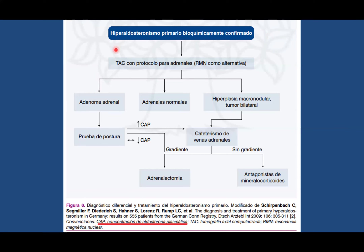Una vez diagnosticado bioquímicamente al paciente con hiperaldosteronismo, tenemos que hacer el diagnóstico imaginológico también, mediante tomografía o resonancia magnética dependiendo del paciente. Al realizar el estudio imaginológico más el estudio bioquímico, podremos decidir el procedimiento de adrenalectomía o simplemente el tratamiento farmacológico. Idealmente la mayoría de pacientes tienen que tener ambos: el tratamiento farmacológico y el tratamiento quirúrgico dependiendo de lo que se evidencie en el estudio imaginológico.